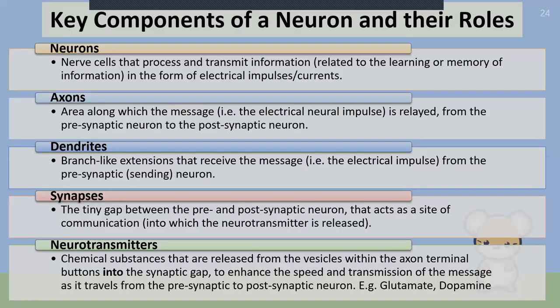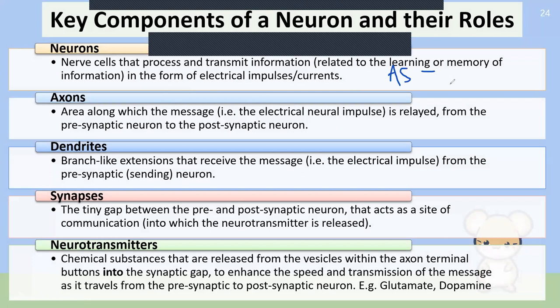Axons send or transmit the message and dendrites receive — you can use the memory tip 'as doctor' to remember that: axons send, dendrites receive. The synapses are the gap between two neurons onto which the neurotransmitter is released; it acts like a site of communication. The neurotransmitters themselves are chemical substances released from the axon terminal — or more specifically from vesicles, which are like little pouches within the axon terminal.